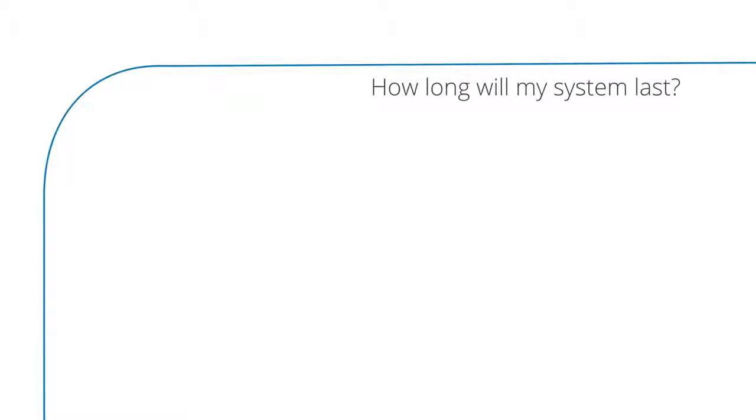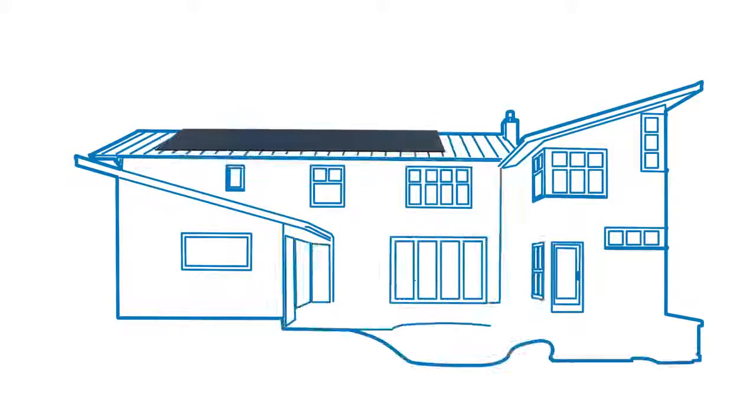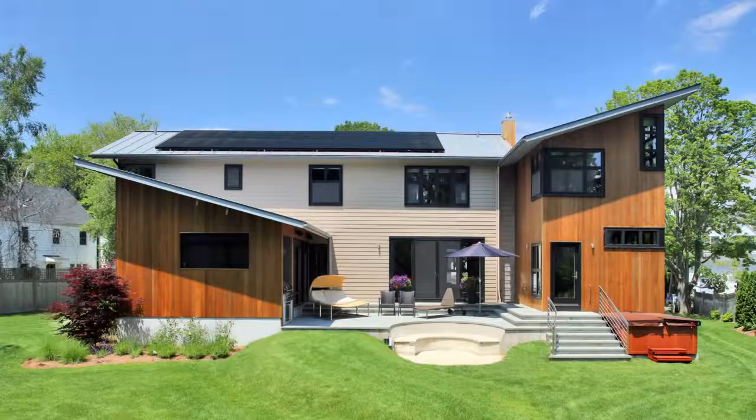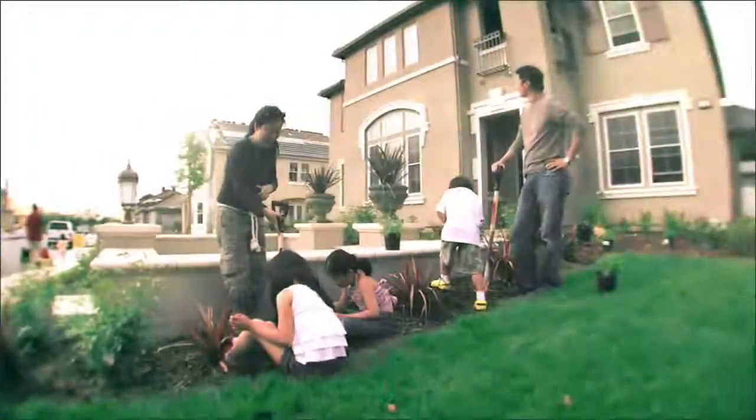Question 2: How long will my system last? SunPower systems are designed to last up to 40 years. And because they're inherently stronger, we stand by them with the best combined power and product warranty available. It's a great feeling to know your system and your warranty are second to none.